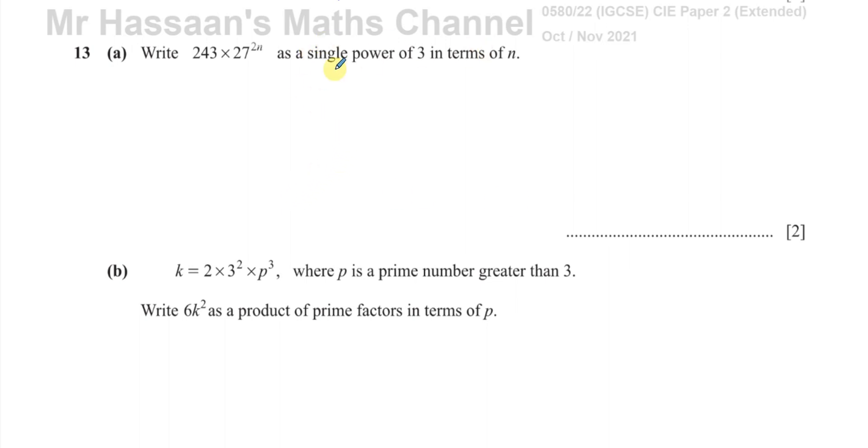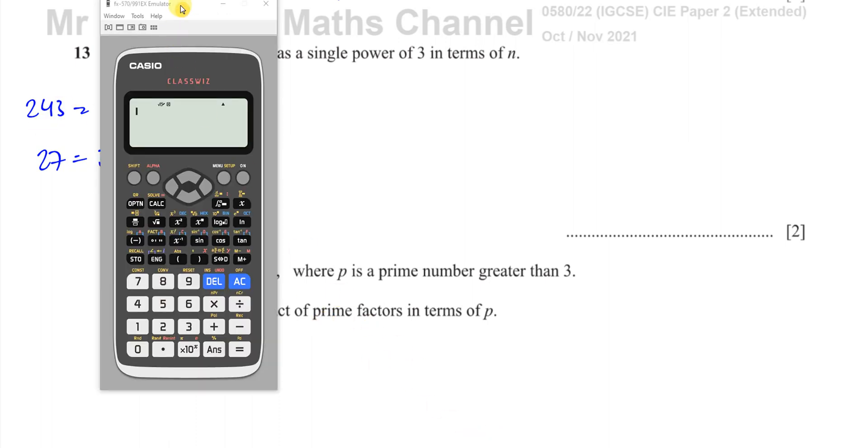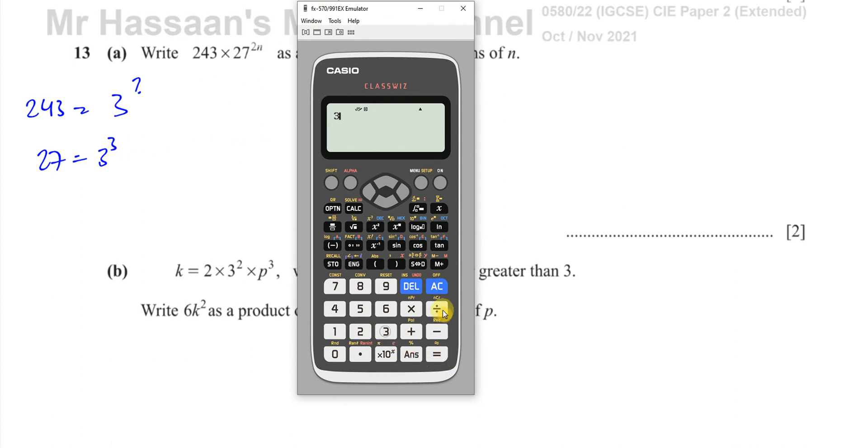Okay, so now basically what we have to realize is both of these numbers should be able to be written as 3 to the power of something. I know that 27 is 3 to the power of 3, so we've got to find out what 243 is.